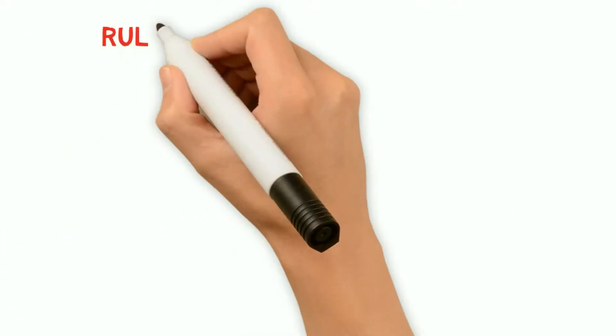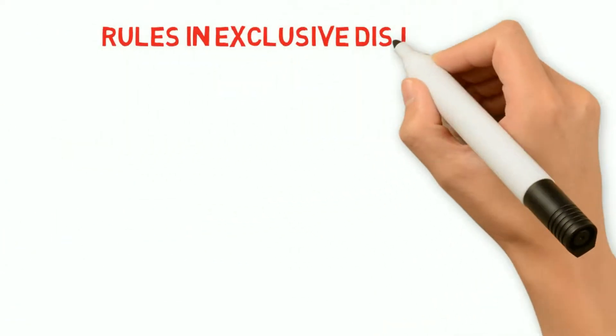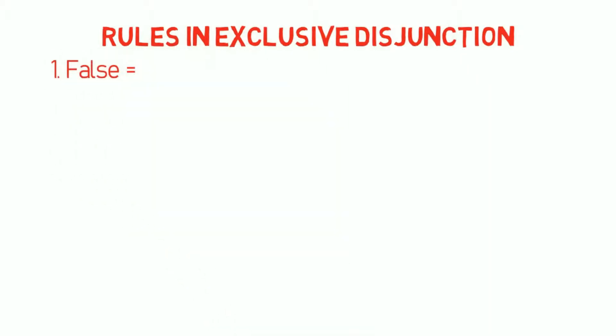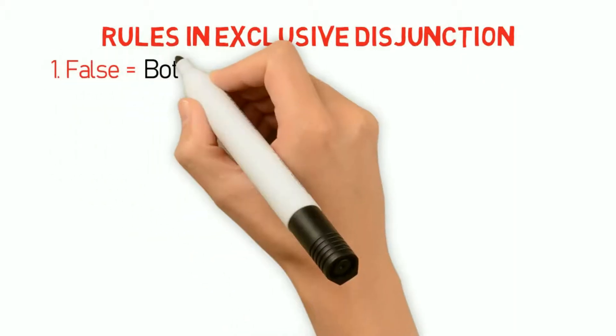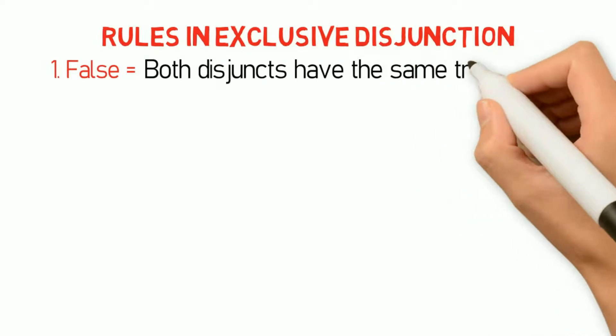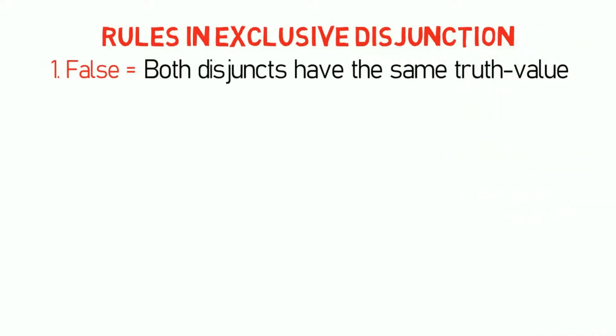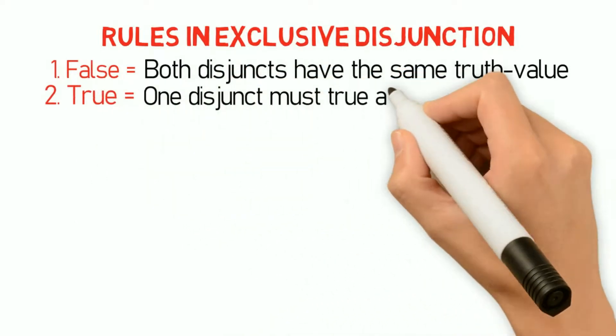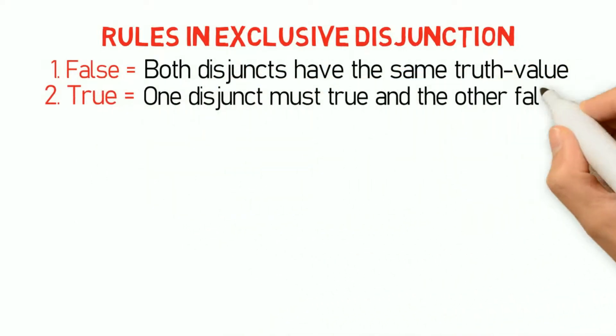Now here are the rules in exclusive disjunction. An exclusive disjunction is false if both disjuncts have the same truth value. Thus for an exclusive disjunction to be true, one disjunct must be true and the other false, and vice versa.